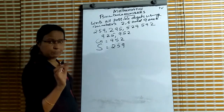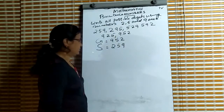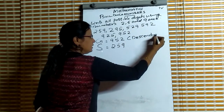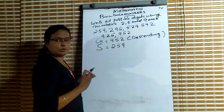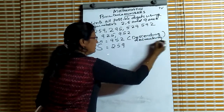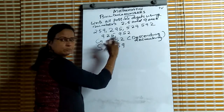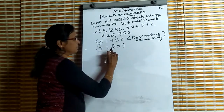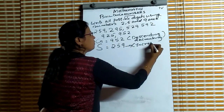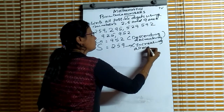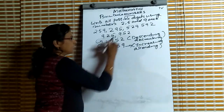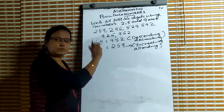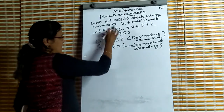To write the smallest and greatest number, we use a rule. The given digits are 2, 5, 9. When we write these digits in descending order — that is decreasing order — decreasing order means greatest number to smallest. And increasing order means smallest number to greatest. That is the rule.